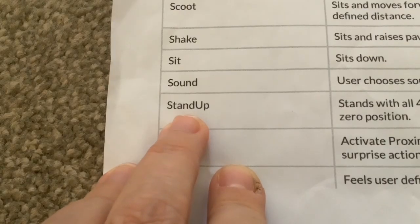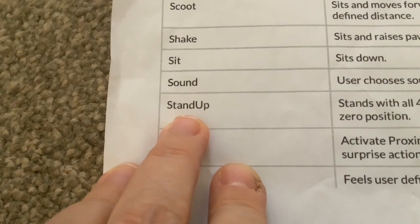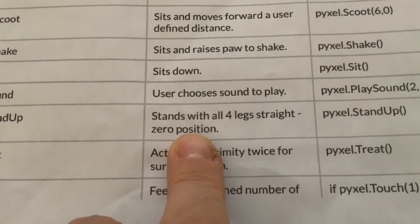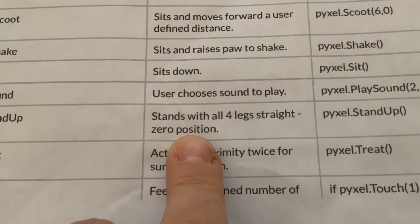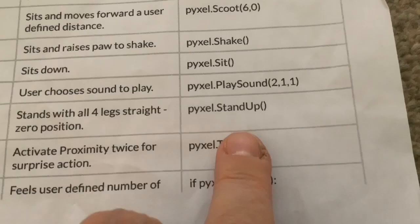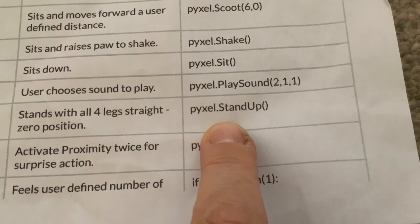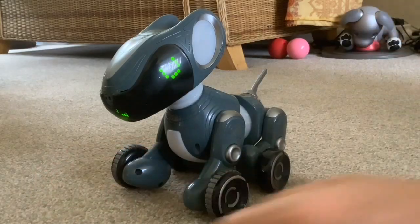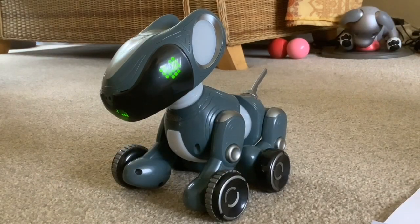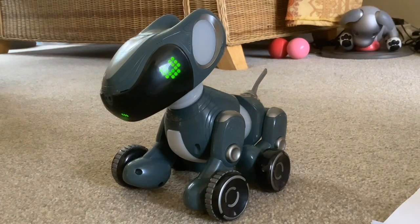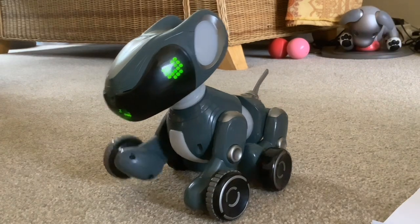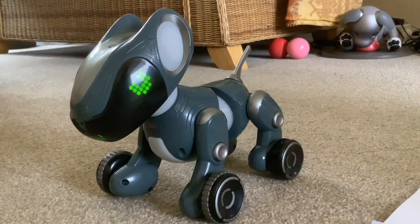The next command is stand up — stand with all four legs straight, the zero position. The Python code is pixel.standup with nothing in the brackets. It's number two. Very good.